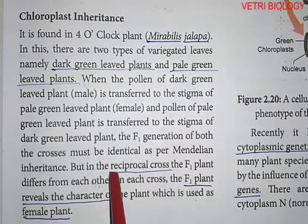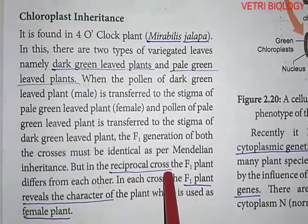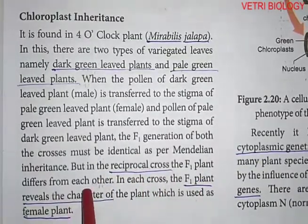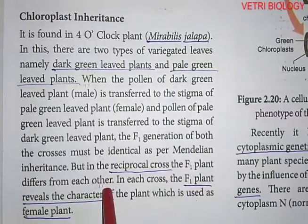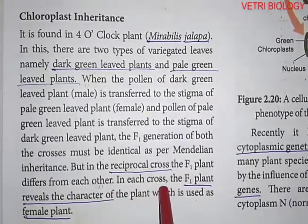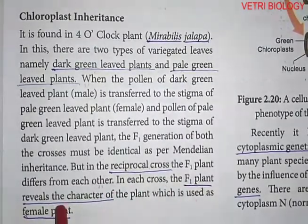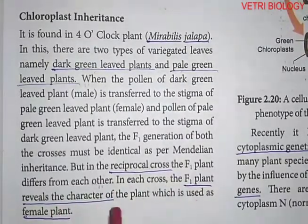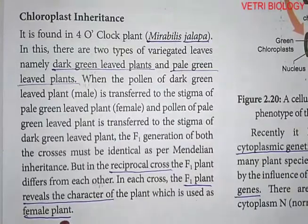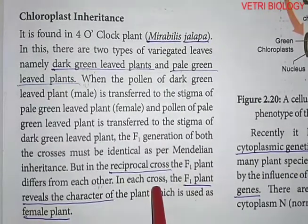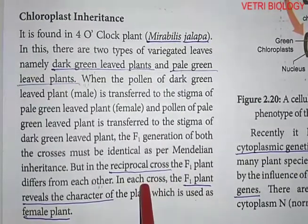But in this reciprocal cross, the F1 plants differ from each other. In each cross, the F1 plant reveals the character of the female plant. In the Mirabilis jalapa reciprocal cross, the dominant character expressed in F1 is that of the female parent.